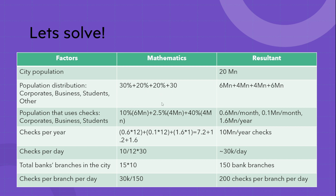Among the 4 million people involved in small and medium businesses, only 2.5% use checks — and that too in bigger tenders and similar transactions. So 2.5% of 4 million becomes 0.1 million per month.